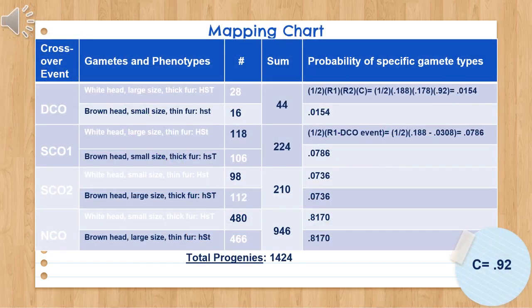Now that we've learned what these crossover events look like, we can use Otto's map and the coefficient of coincidence to see the eight different gamete types and the probability of them being produced from the four different crossover events. I tested a total of 1,424 progenies, and since each event produces two gamete types, the probability of a specific gamete resulting is one half of the probability of the event occurring. For example, getting a specific gamete type from the double crossover event is one half times the recombination frequency of R1 and R2 times the coefficient of coincidence: one half × 0.188 × 0.178 × 0.92, giving 0.0154. For a single crossover at position 1, we do one half times R1 minus the probability of a double crossover event: one half × (0.188 − 0.0368) = 0.0786. The rest of the probabilities for Otto's gametes are shown as well.